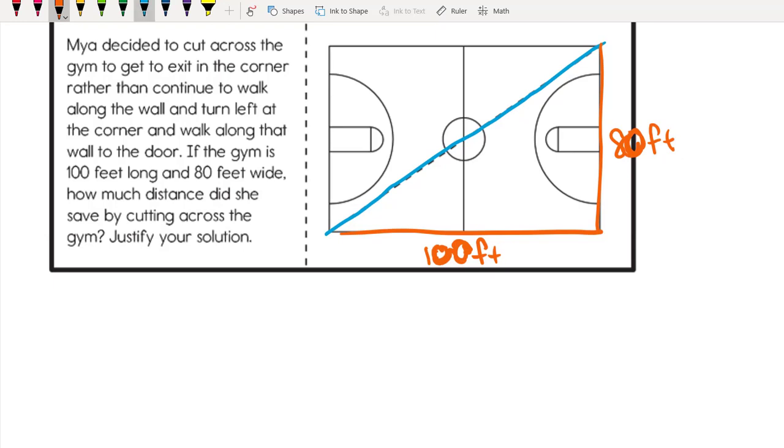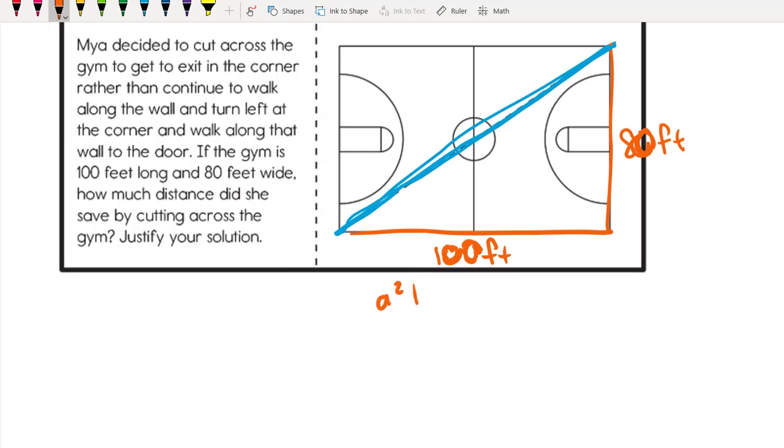We're going to use the Pythagorean theorem a squared plus b squared equals c squared to find out what she actually walked, and then do a little more math after that. We have 100 squared plus 80 squared equals c squared. This is 10,000 and this is 6,400. When we add those together we get 16,400.